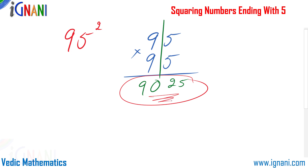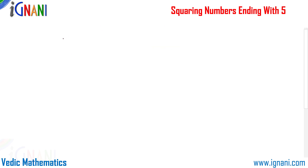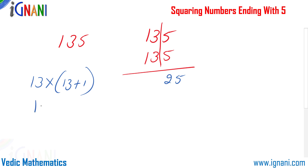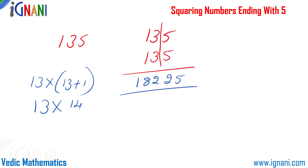Let's try with a three-digit number — the square of 135, which is 135 into 135. First, 5 into 5 is 25. Then 13 into 13 plus 1 is 13 into 14, which equals 182. So 18225 is the answer — that is the square of 135.